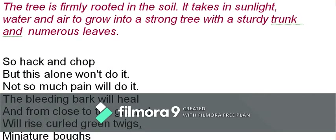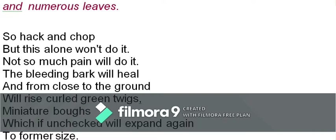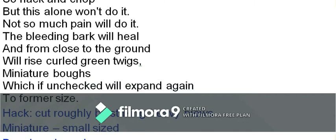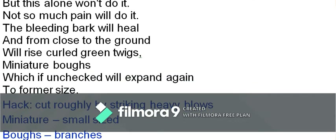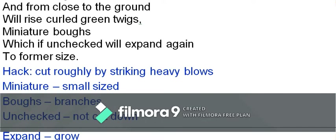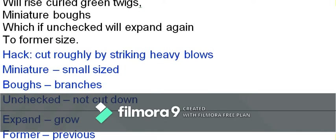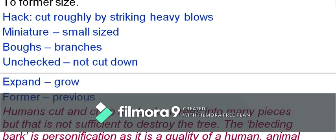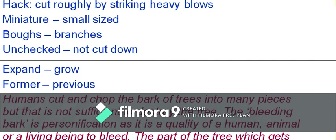The second stanza reads: 'So hack and chop, but this alone won't do it. No pain will do it. The bleeding bark will heal, and from close to the ground will rise curled green twigs, miniature boughs, which if unchecked will expand again to former size.' 'Hack' means to cut roughly with heavy blows; 'miniature' means very small sized; 'boughs' means branches; 'unchecked' means not cut down; 'former' means previous size.